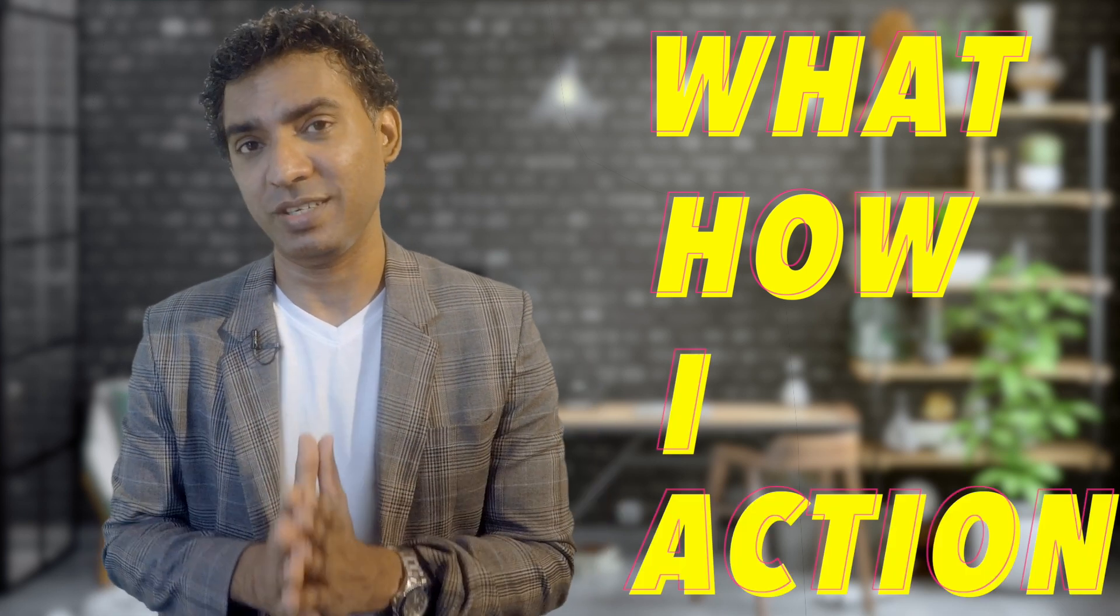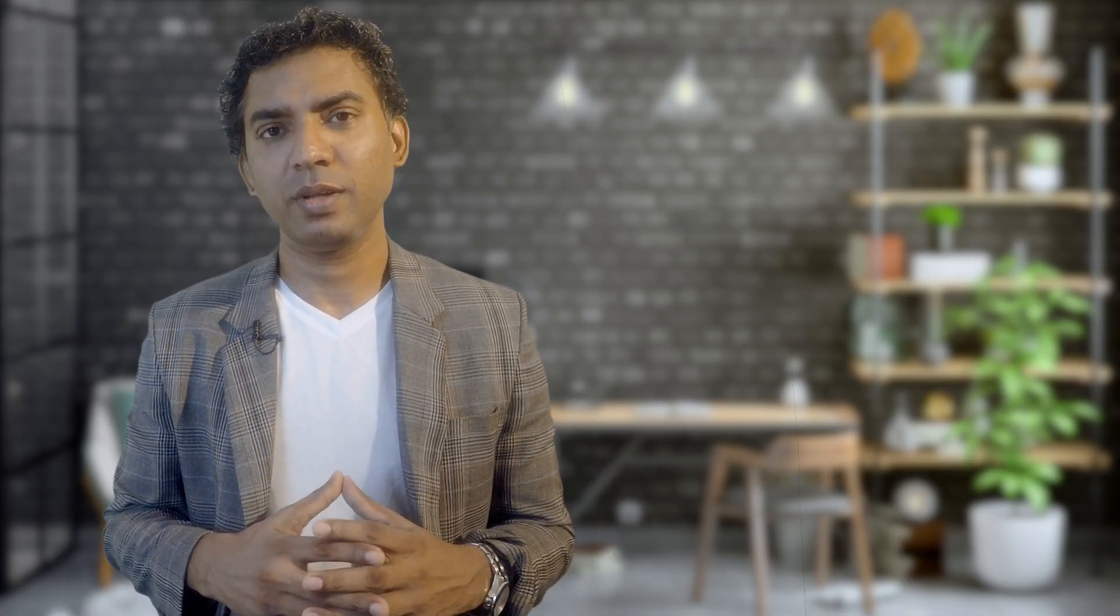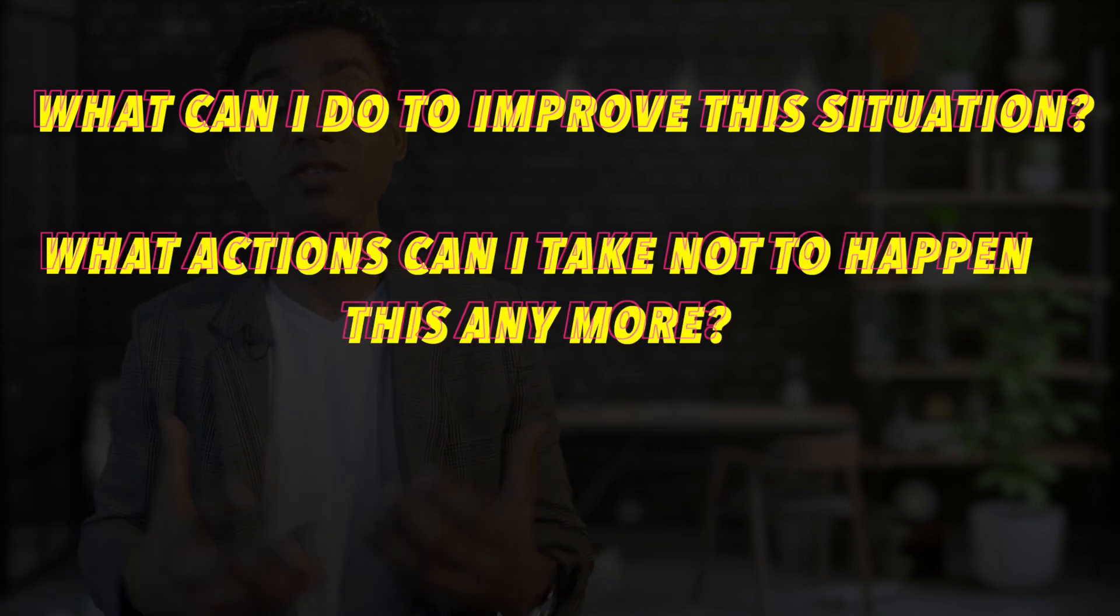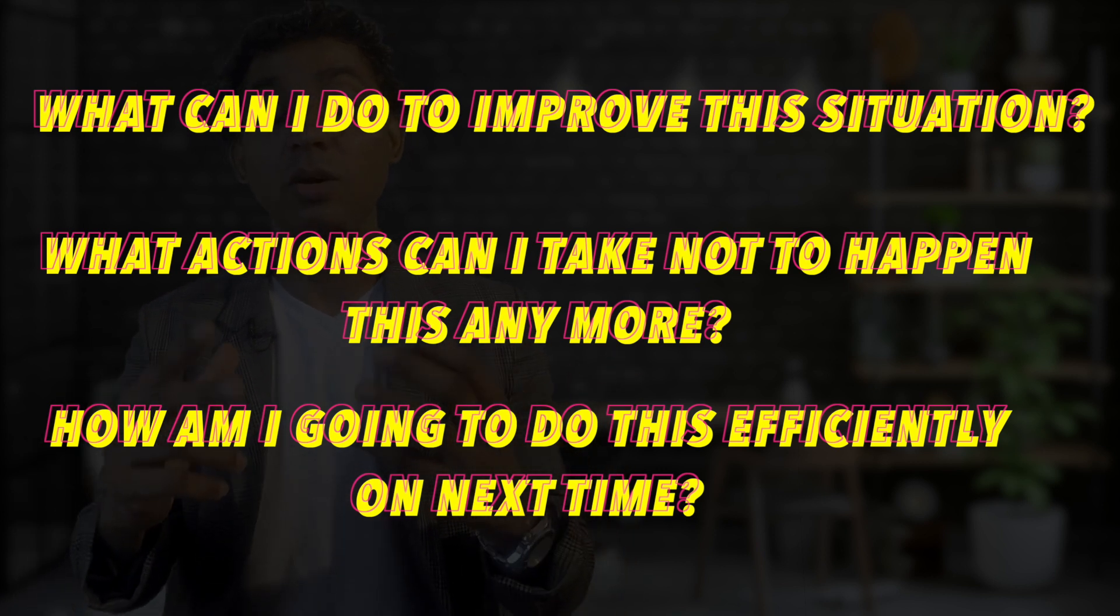Instead of asking these questions, Miller presents a very powerful tool called QBQ. In the QBQ model, we ask questions starting with what and how, and it focuses on 'I', not anyone else. It also focuses on a particular action. Now you're going to ask questions like this: What can I do to improve this situation? What actions can I take so this doesn't happen anymore? How am I going to do this efficiently for the next time? When you're asking these types of questions, you're not blaming anyone. You're focusing on yourself. You're focusing on improving yourself. Therefore, the situation is going to improve.